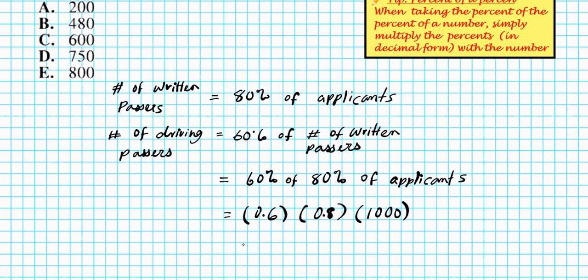If you input that into your calculator, you end up with 480 applicants. Answer is option letter B.